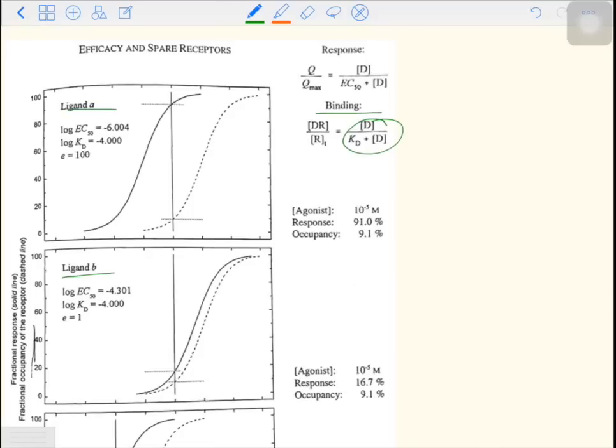However, the solid lines are different in two graphs. The solid line stands for the fractional response. And why is it different? Because EC50 is different. And why is EC50 different? Because efficacy is different. And that leads to a different EC50, which is Kd over 1 plus E. When efficacy is large, EC50 will be smaller. When EC50 is smaller, Q over Qmax is bigger, because EC50 is in the denominator.